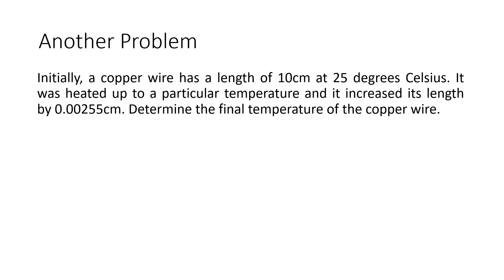This will be our last problem in this lesson video. Initially, a copper wire has a length of 10 centimeters at 25 degrees Celsius. It was heated up to a particular temperature and it increased its length by 0.00255 centimeters. Determine the final temperature of the copper wire. This problem is different from the previous two because this time we are asked to determine the final temperature. We will use the formula: final length equals initial length times the quantity 1 plus alpha delta T.